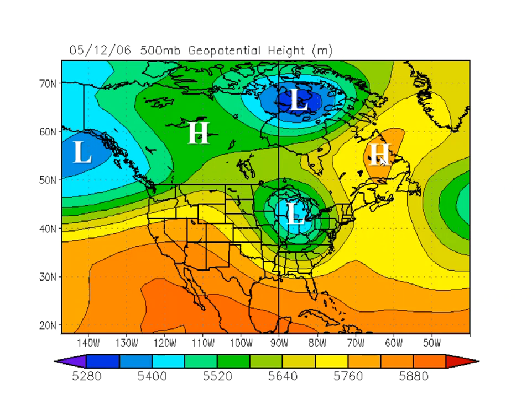What formally makes these highs blocking highs? A 500 millibar closed high or ridge qualifies as a blocking high if several criteria are met. First, the basic westerly current must split into two branches — like the split in the flow of water around a rock in a fishing stream — and each branch must transport appreciable mass, as seen here.